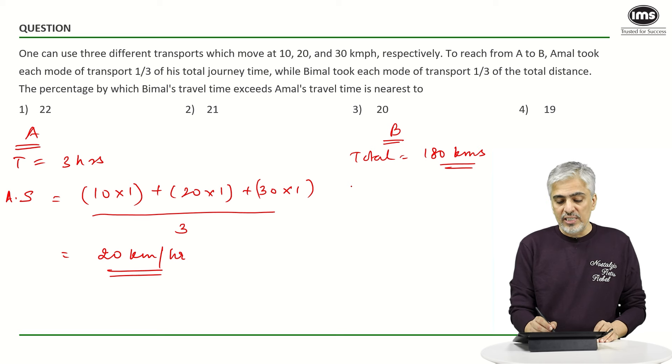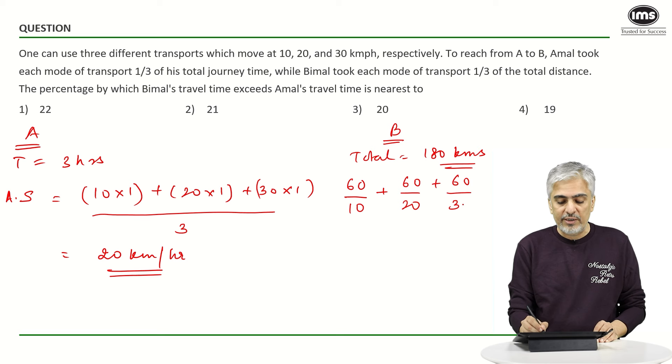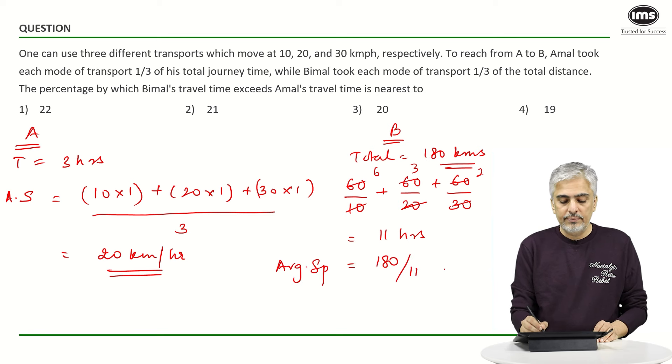So in the first case the first 60 kilometers he has covered at a speed of 10. So he took 6 hours. The second 60 kilometers he covered at a speed of 20. So he took 3 hours and the third 60 kilometers he covered at a speed of 30. So he took 2 hours. So this is 6 hours plus 3 hours plus 2 hours. So he took a total of 11 hours for 180 kilometers. So his average speed became 180 upon 11 kilometers per hour. Now,